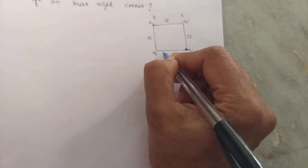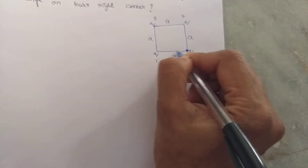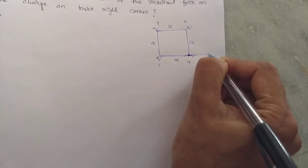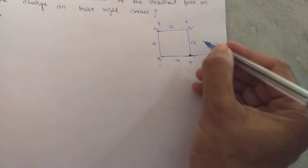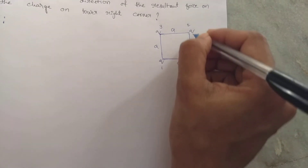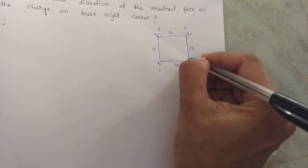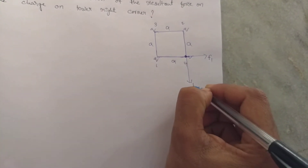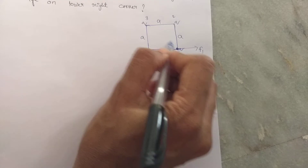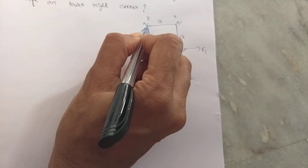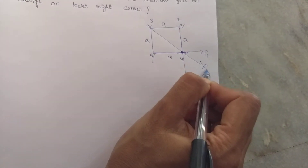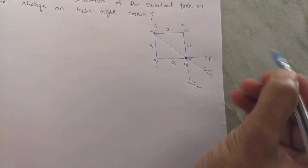The force acting on this charge due to the first one will be acting in this direction — F1. The force acting on this charge due to the second one will be acting in this direction — F2. The force acting on this charge due to the third one will be acting in this direction — that is F3.